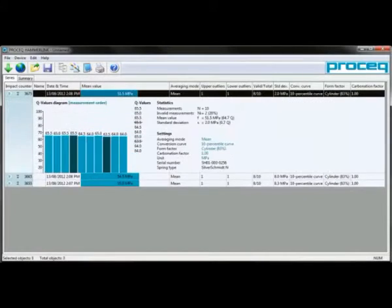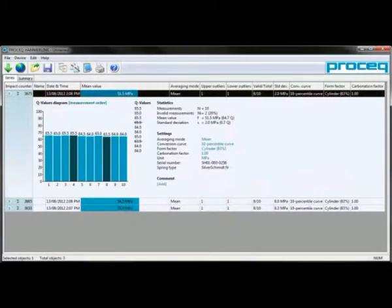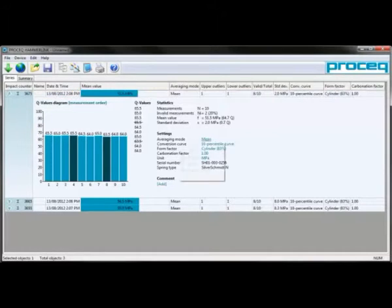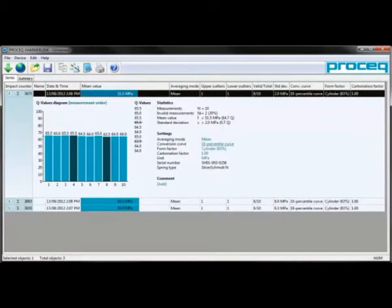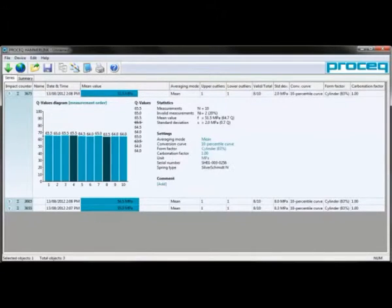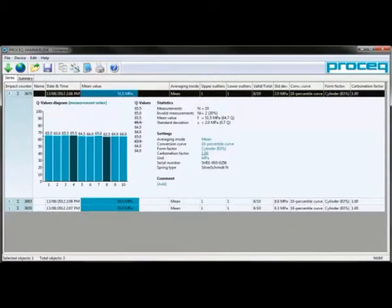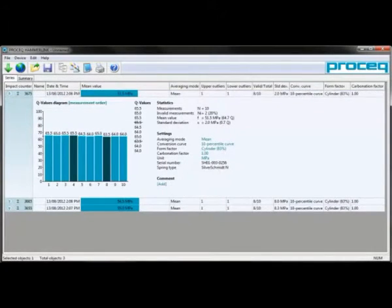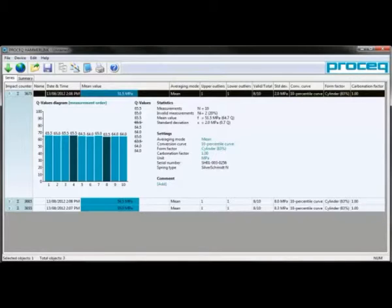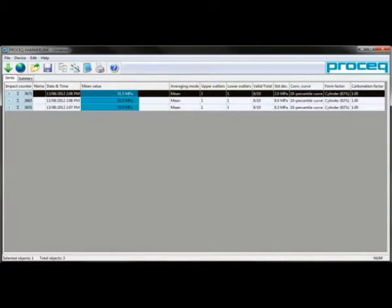We can open any series to get a better view of what individual impacts make it up. As you can see, we have two dark colored impacts. Each of these is one that was dropped due to the averaging method. We're also able to update any of the settings which we placed during hammer operation to a different value. So we can have different averaging modes, cylinder types. We can also add a carbonation factor, which is used to correct for hardened surfaces due to carbonation of older concrete structures.